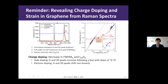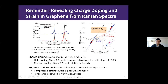Electron doping also induces a shift in G and 2D peaks, but in a more complex relation. In addition, strain can also be identified—it induces shifts in G and 2D peaks following a line with a slope of 2.2. Compressive strain induces shifting toward higher wave numbers, whereas tensile strain results in a shift of the G and 2D peaks toward lower wave numbers, and the amount of strain applied scales with the shift of the 2D peak position.